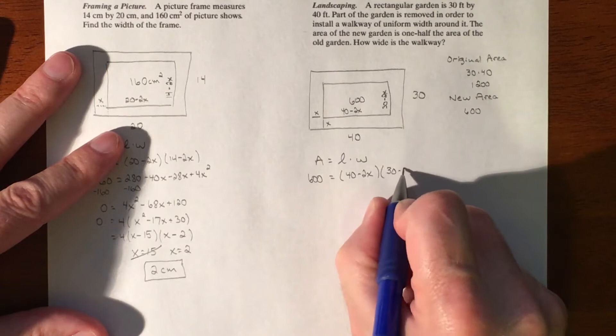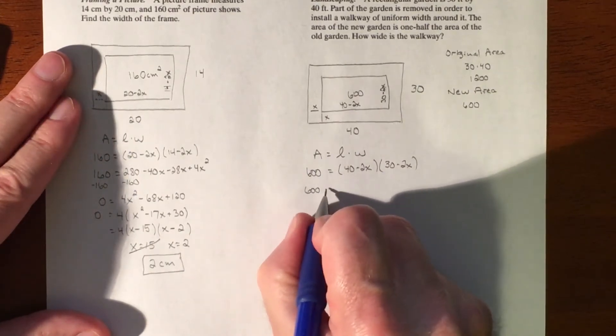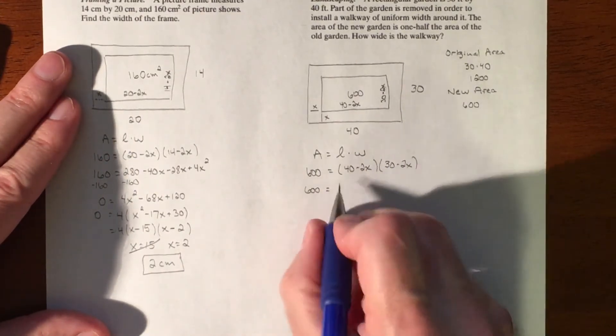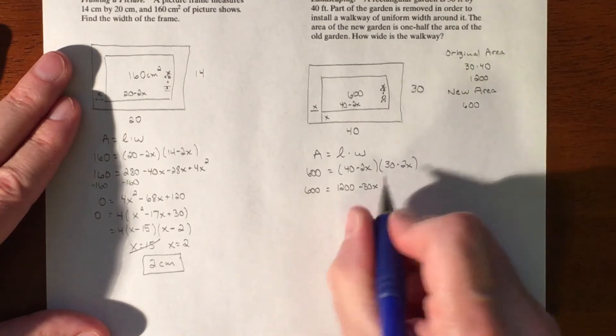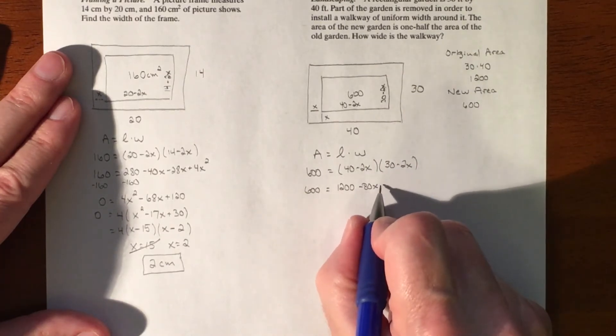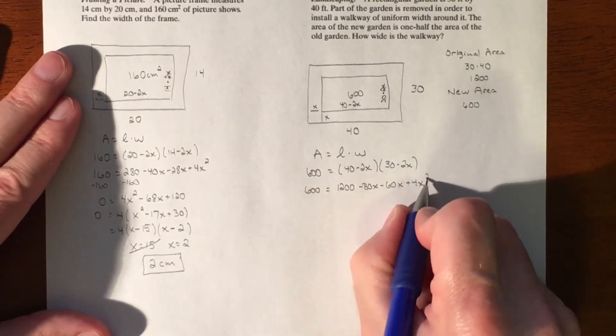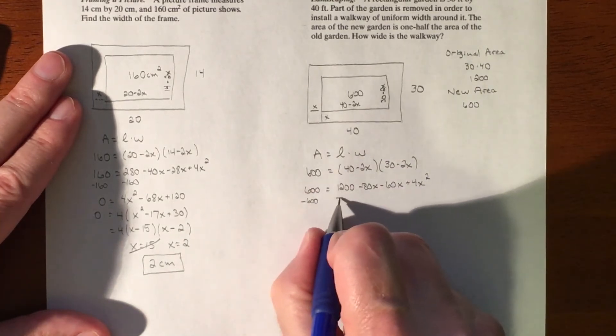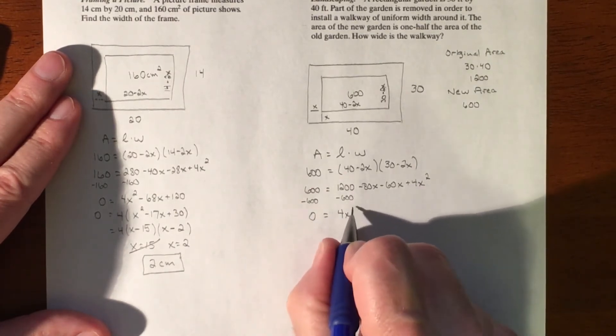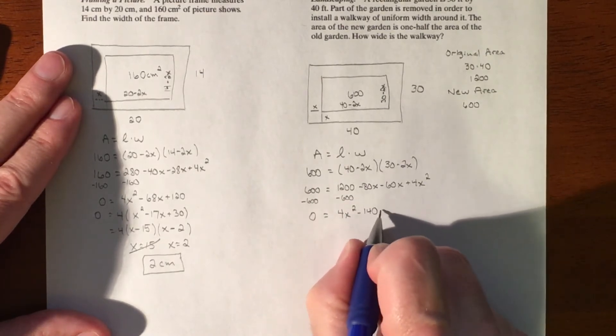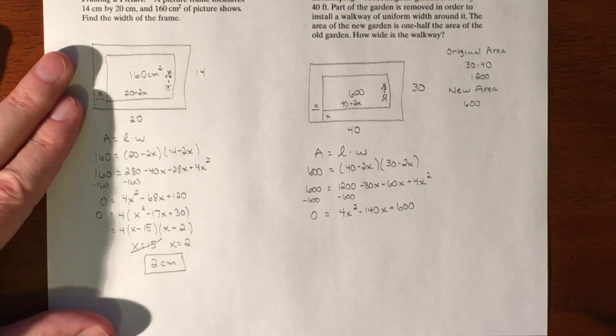So we have our dimensions, 40 minus 2x times 30 minus 2x, and then we're going to solve this quadratic. So we're going to distribute. 600 equals 40 times 30 is 1200, and then 40 times negative 2 is minus 80x, and then 2 times negative 2 times 30 is negative 60x plus 4x squared. We're going to rearrange everything. We're going to subtract the 600 over here so we can solve our quadratic setting it equal to zero. So we got 4x squared minus 140x plus 600.